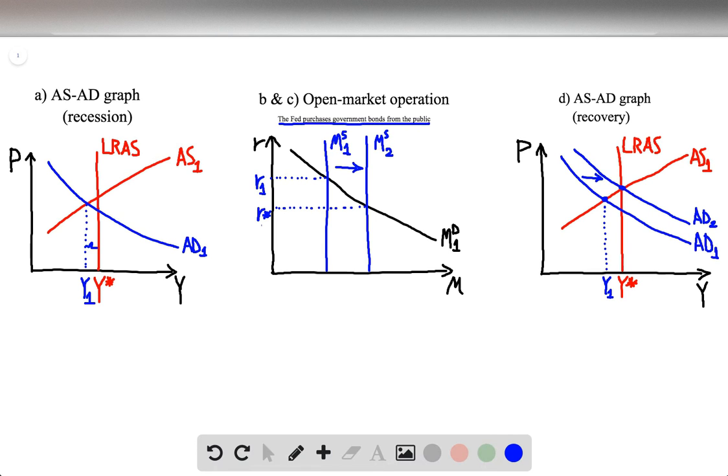This means that the Fed will tell its traders, just go on and keep buying government bonds. Buy as much as it is enough to lower the interest rate to a desired level.